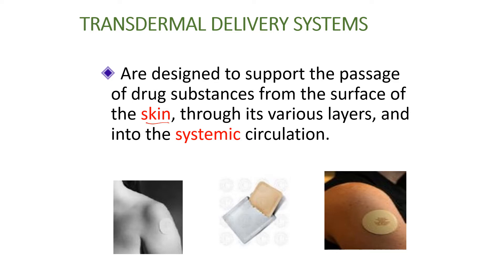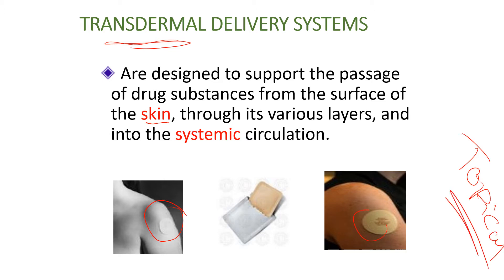If the drug cannot reach systemic circulation, it will be considered a topical drug delivery system. Both topical and transdermal drug delivery systems are applied on the skin, but if the drug can reach systemic circulation, it is called transdermal. If it cannot reach systemic circulation, it is just a topical dosage form, like most creams and ointments.